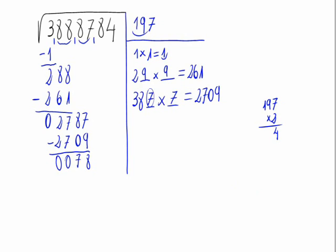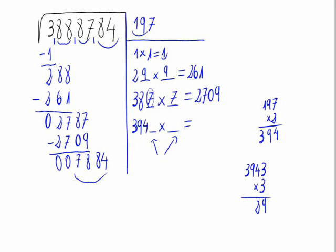So 197 times 2 gives us 394. Line times line equals, we get the last block down. Now, we are looking for a number that will get as close as possible to 7884 without getting over it. So let's try with number 3. So 3943 times 3 would give us 11829, which is higher than 7884, so we must try with another number.